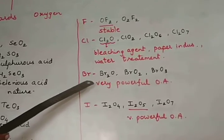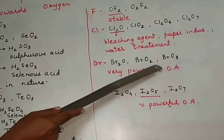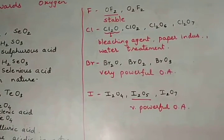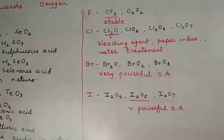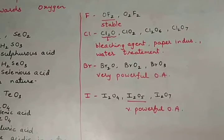Bromine forms oxides as Br2O, BrO2, and BrO3. These are the three oxides which are formed by bromine. All the three oxides are found to be very powerful oxidizing agents.